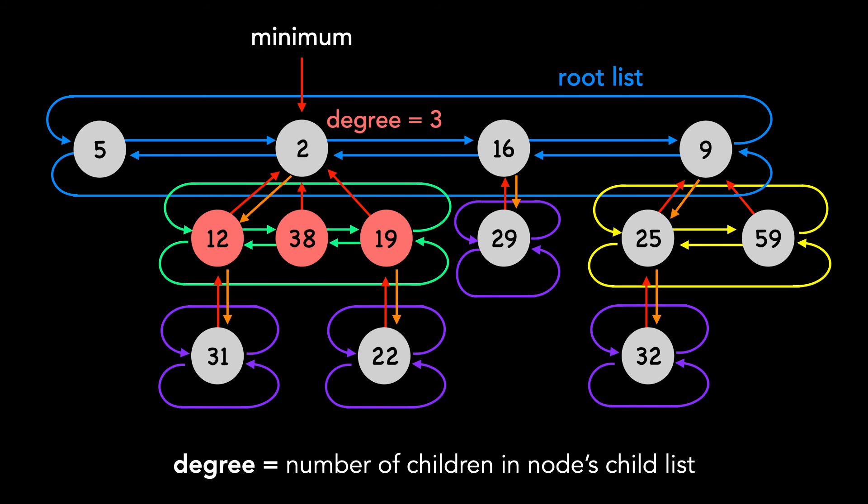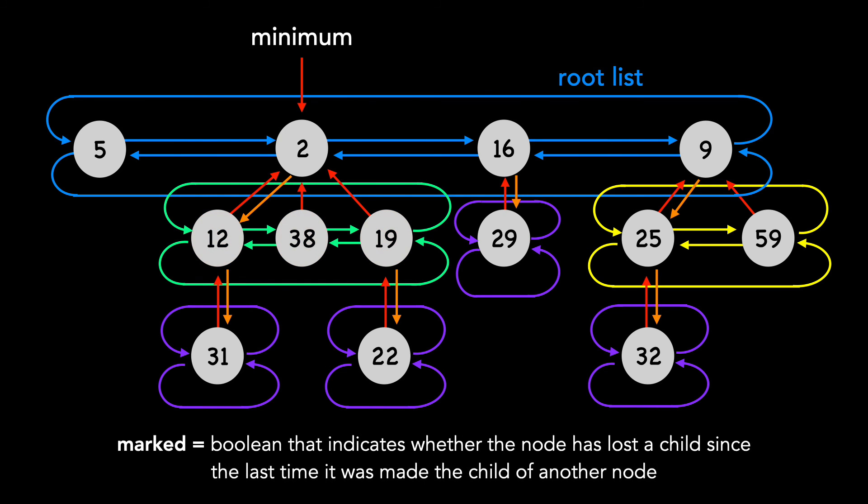Finally, there is another Boolean attribute called marked, that indicates whether the node has lost a child since the last time it was made the child of another node. If that doesn't make sense right now, don't worry. We're going to ignore this until we talk about the decrease key operation, which I may or may not cover in depth.